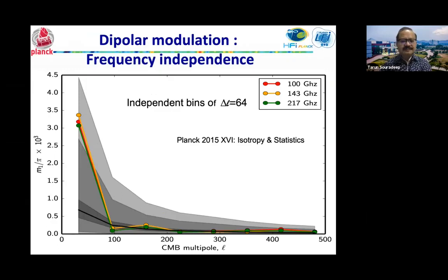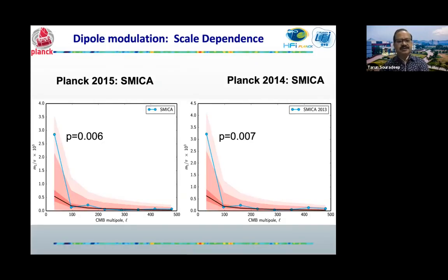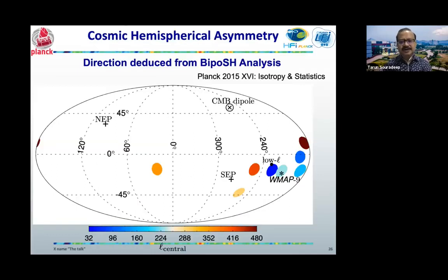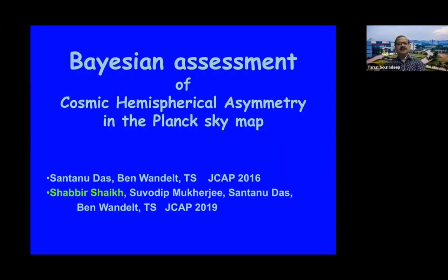Where the Planck part stopped was with the team giving a p-value of about six parts in a thousand in the 2015 SMICA map. The direction is also quite distinct from the southern ecliptic pole. The blue direction — from the low-l part — is quite separate from the southern ecliptic pole, with the size of the circle representing the one-sigma error on the location.